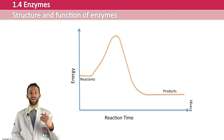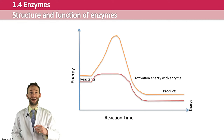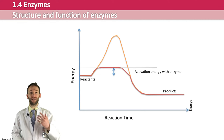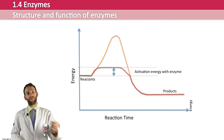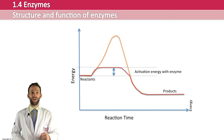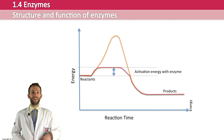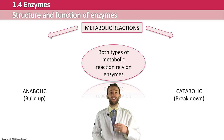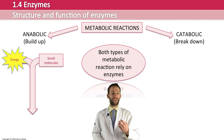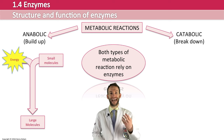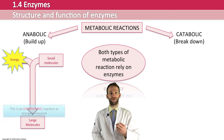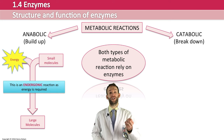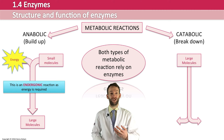The way enzymes work is that they actually lower that activation energy, meaning you don't need as much energy to get the reaction to work — shown as the red line on the graph. Going back to the boulder analogy, it's like having a couple of friends helping you — you don't need to put in as much energy. There are two types of metabolic reaction: anabolic, where you build molecules up using energy — an endergonic reaction — and catabolic, where you break a large molecule down and release smaller molecules and energy, which is an exergonic reaction.